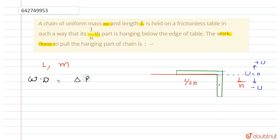So the required work done equals change in potential energy of chain. If we talk about the initial potential energy, it equals minus m g l by 2n. So m is capital M by n into l by n into g l by 2n.